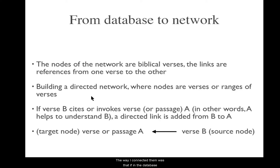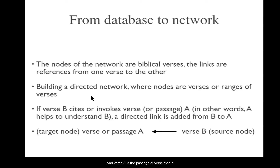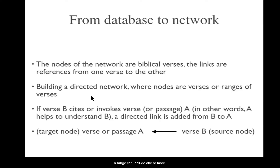The way I connected them was: if in the database, a verse B is citing or invoking a verse A, then there is a directed link from verse B to verse A. Verse A is the passage that is helpful in understanding verse B. So the arrow points to the verse or text that is helpful in understanding our source. A range can include one or more verses, and you will see later how this works.